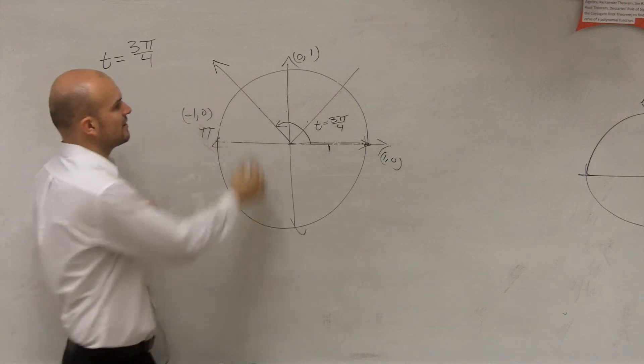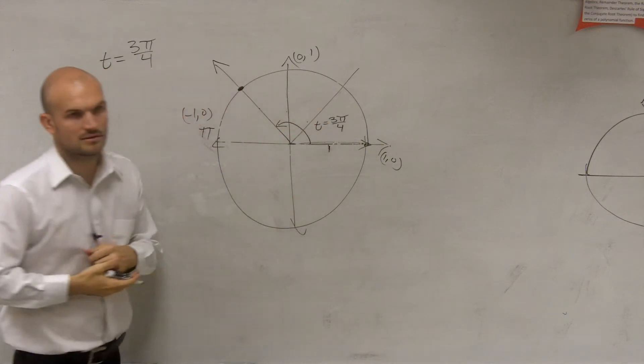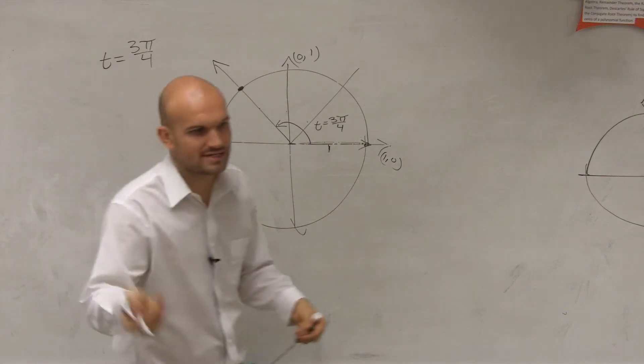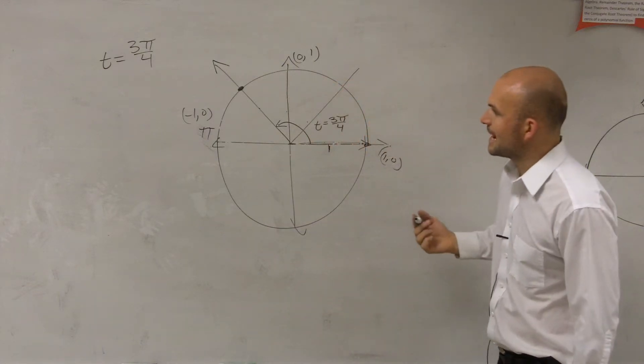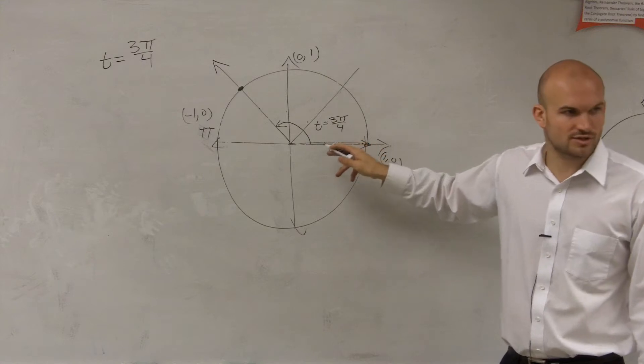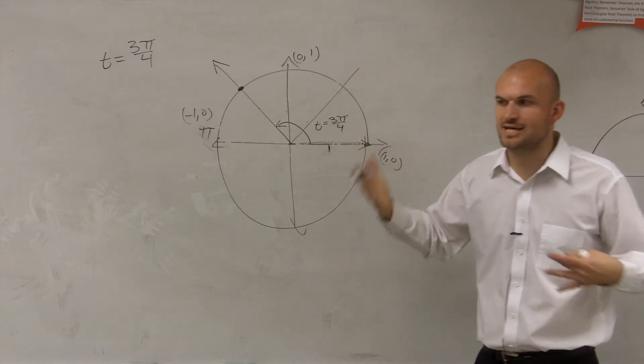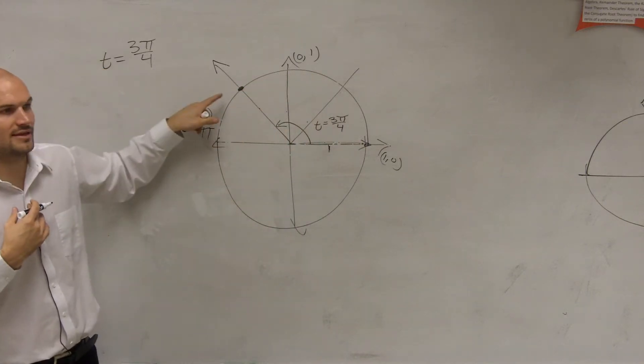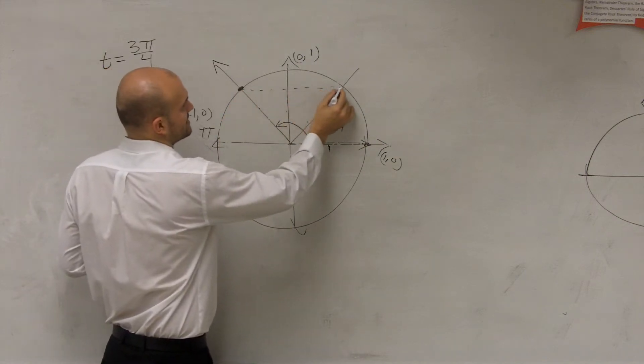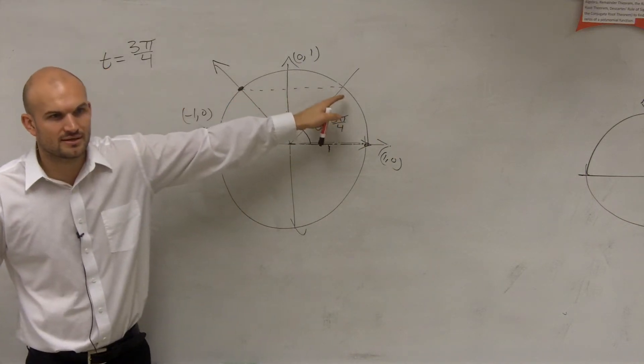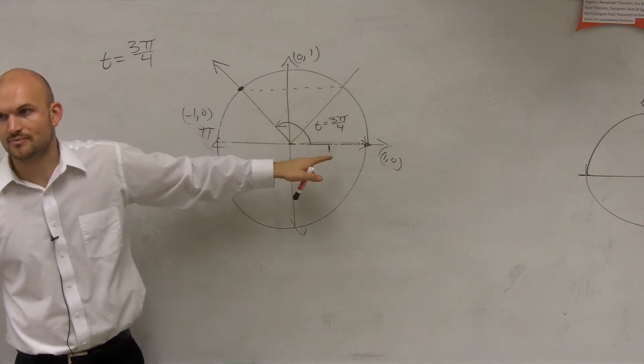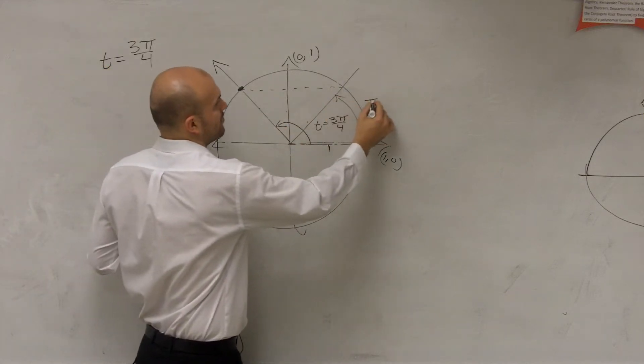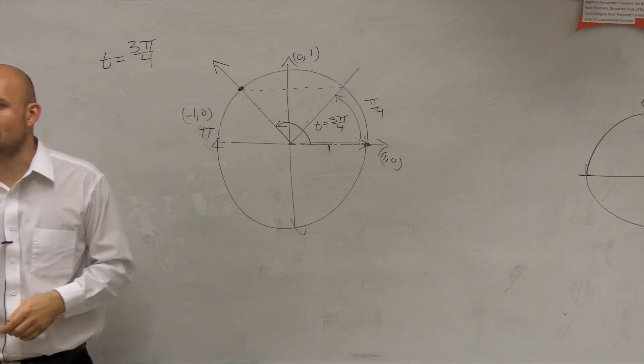But what we need to do is I want to figure out what this point is. We worked on practicing the unit circle and finding those points. One thing I noticed is the denominator is 4, which tells me it's a certain type of angle. The other thing is it's directly reflected across the y-axis of this coordinate point. And this coordinate point was how many fourths? One fourth, or what we call π/4.